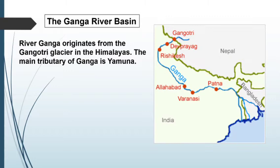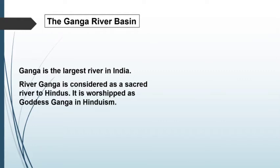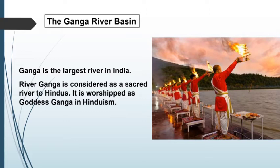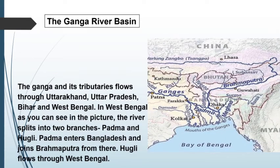River Ganga originates from the Gangotri glacier in the Himalayas. The main tributary of Ganga is Yamuna. Ganga is the largest river in India and is considered a sacred river by Hindus, worshipped as goddess Ganga. The Ganga and its tributaries flow through Uttarakhand, Uttar Pradesh, Bihar and West Bengal. In West Bengal, the river splits into two branches: Padma and Hooghly. Padma enters Bangladesh and joins Brahmaputra, while Hooghly flows through West Bengal.